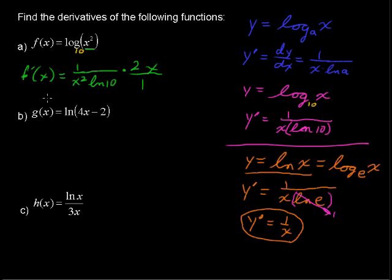So, we've got 2x over x squared. We can simplify some stuff here. So, f prime of x, the first derivative, equals 2 over x natural log of 10. x times the natural log of 10 is in the denominator. Okay, that's the first one.